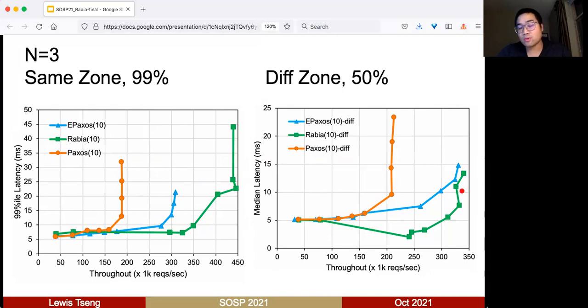In the case of different availability zones, yes, we have reduced performance but still comparable with EPaxos and much higher than MultiPaxos. We have other performance evaluations in the paper, please check it.